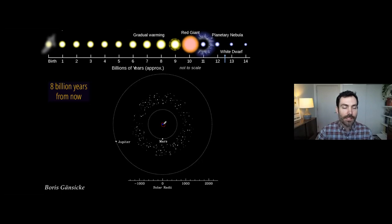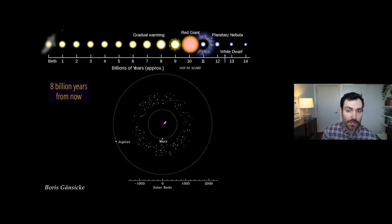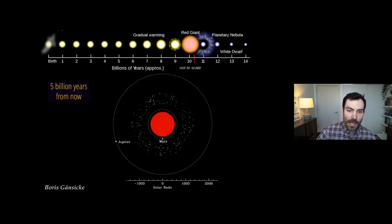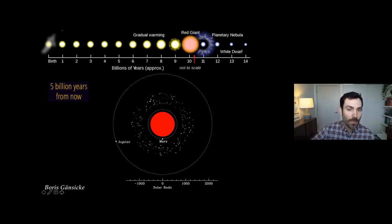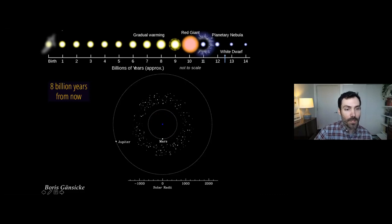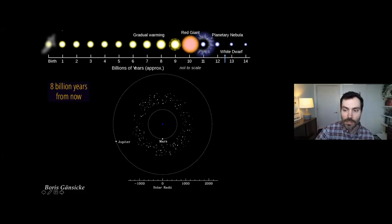That star will have lost a lot of mass, which means everything that survives — Mars, Jupiter, and lots of the asteroids in the asteroid belt — will also survive that phase. But their orbits will have expanded, and anytime those orbits change they get destabilized. This is true not just for asteroids, but for comets, Kuiper belt objects, and Oort cloud objects much farther away. They're going to get destabilized and will likely fall onto the remaining white dwarf.